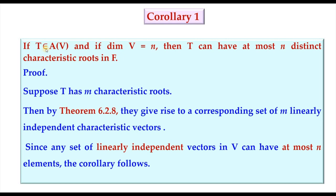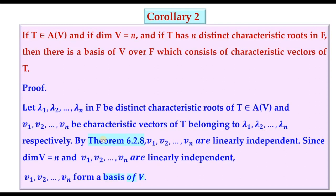Corollary 1: If T belongs to A(V) and the dimension of V is n, then T can have at most n distinct characteristic roots. If T has m characteristic roots, by the theorem they give rise to m linearly independent characteristic vectors. Since a vector space of dimension n cannot have more than n linearly independent vectors, we have m ≤ n — so T has at most n distinct characteristic roots.